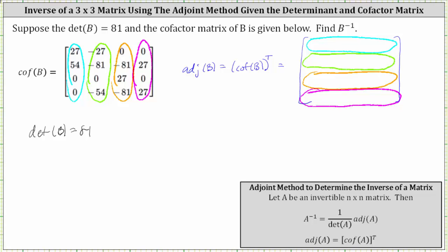The first row in the adjoint of B, or the transpose of the cofactor matrix, is 27, 54, 0, 0. The second row is negative 27, negative 81, 0, negative 54.